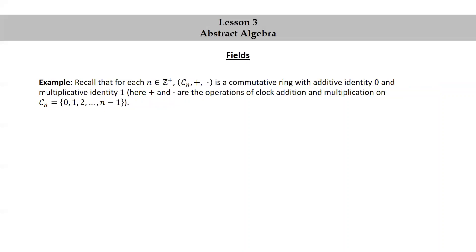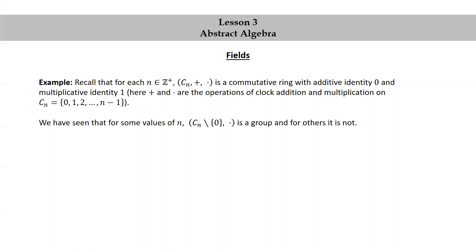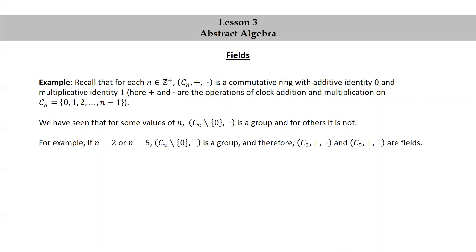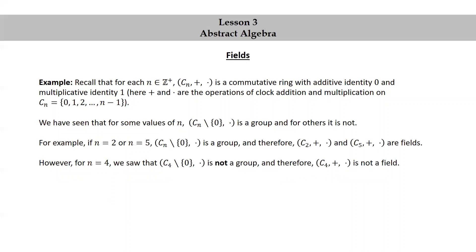Recall that for each positive integer n, (Cₙ, +, ×) is a commutative ring with additive identity 0 and multiplicative identity 1, where + and × are clock addition and clock multiplication on the set Cₙ = {0, ..., n−1}. We have seen that for some values of n, removing 0 from Cₙ gives a group under multiplication, and for others it does not. For example, if n = 2 or n = 5, then Cₙ \ {0} under clock multiplication is a group, and therefore (C₂, +, ×) and (C₅, +, ×) are fields. However, for n = 4, (C₄ \ {0}, ×) is not a group, and therefore (C₄, +, ×) is not a field.